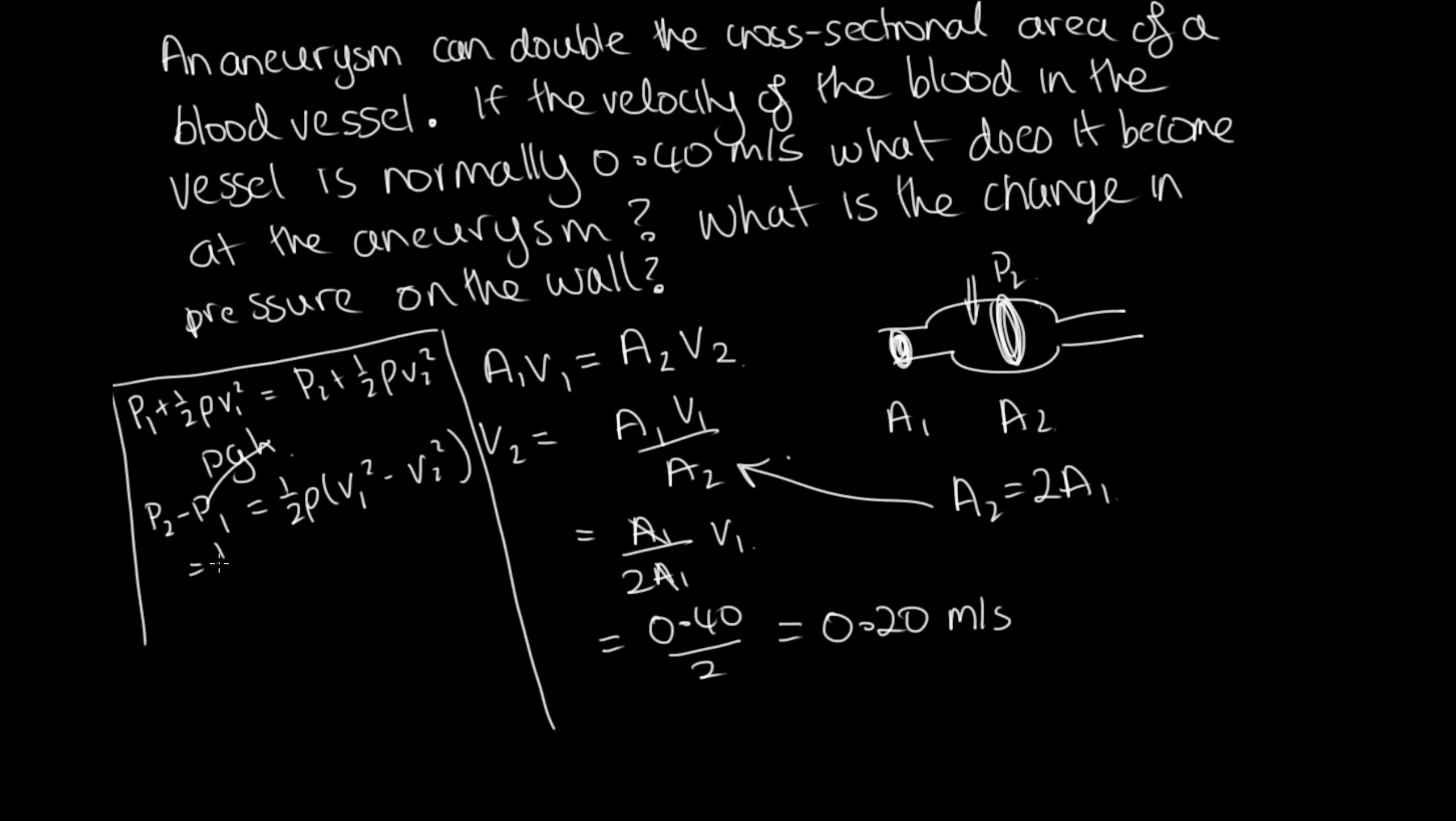So this is equal to a half. Now we'll need to know the density of blood. So we were told previously that the density of blood was equal to 1,050 kilograms per meter cubed. So we'll use that same value. So this is 1,050 times V1. The speed in here was 0.40 squared minus 0.20 squared, the velocity in the second part in the aneurysm that we calculated. So solving this on the calculator, we end up with 63 Pascals. So that's the change in pressure between here and here. So it's at a higher pressure in here.